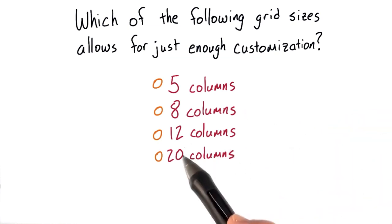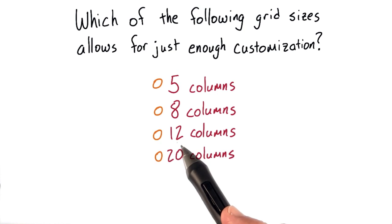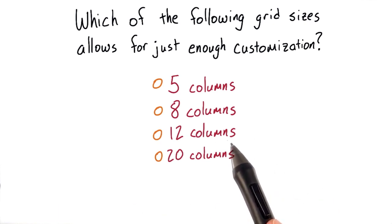With 12 columns, we know that 2, 3, and 4 all divide into 12 evenly. Meaning that we can have 2 even columns, 3 even columns, or 4 even columns on the screen. So this seems like a pretty good answer.